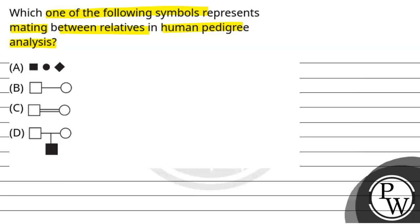So the key concept for this question is symbols used in pedigree analysis.